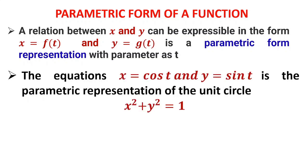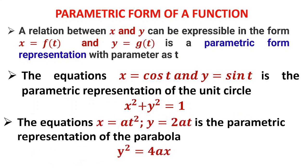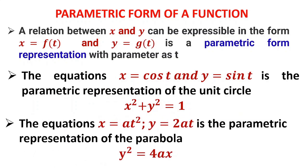The equations x = cos t and y = sin t are a parametric representation of the unit circle x² + y² = 1. When you substitute x and y, the equation is satisfied. Similarly, x = at² and y = 2at is the parametric representation of the parabola y² = 4ax. When you replace y by 2at and x by at², the equation is satisfied.